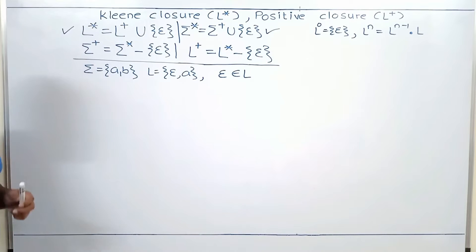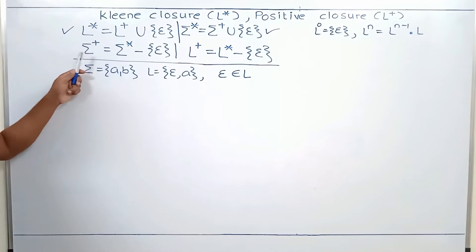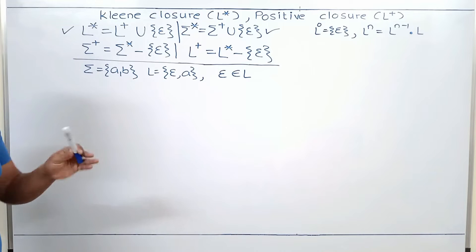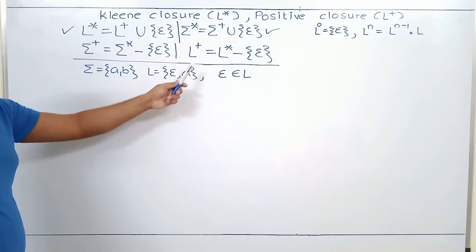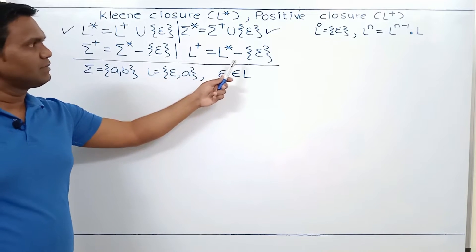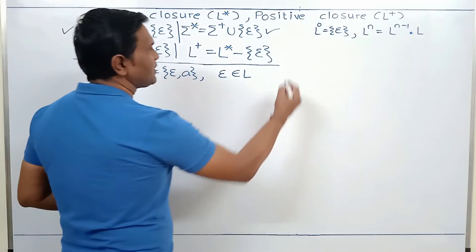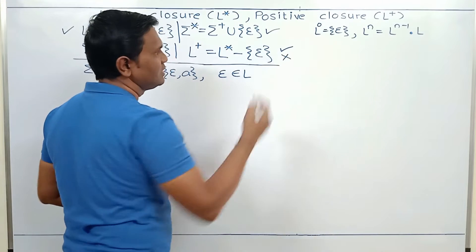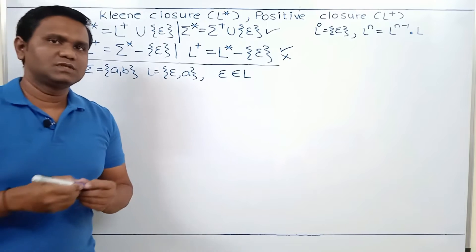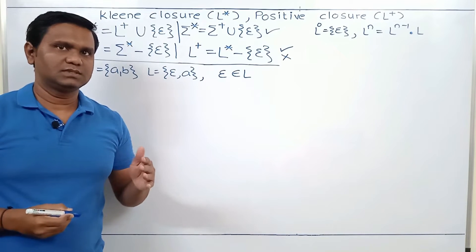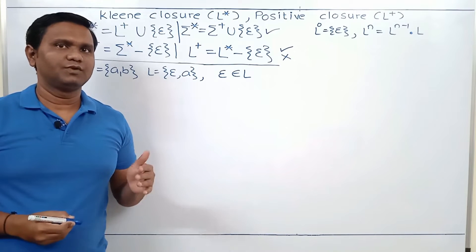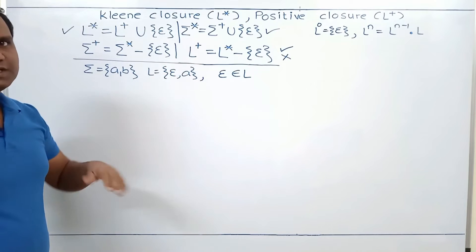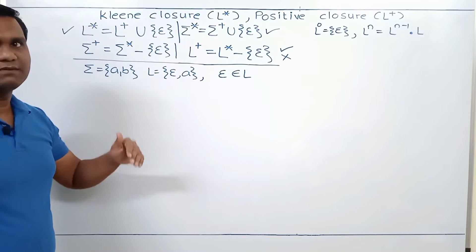When we studied power of alphabet, we studied sigma+ is equal to sigma* minus epsilon. Now, this equation is specific to alphabet — we cannot generalize this equation. If we consider the equivalent equation for language, then L+ is equal to L* minus epsilon. But this equation is not general. We cannot generalize it; it is correct for some languages and does not hold for some languages. So if you study any equation or statement, do not generalize it without giving proper thought. We are going to see when this equation will be true, for which languages it is correct and for which it is not.